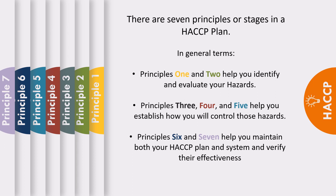There are seven principles or stages in a HACCP plan. In general terms, Principles 1 and 2 help you identify and evaluate your hazards. Principles 3, 4, and 5 help you establish how you will control those hazards. Principles 6 and 7 help you maintain both your HACCP plan and system and verify their effectiveness.